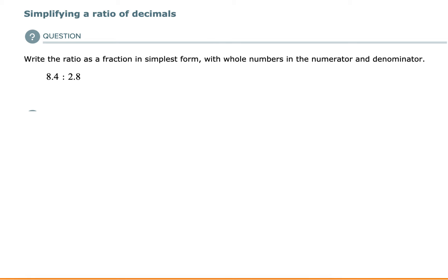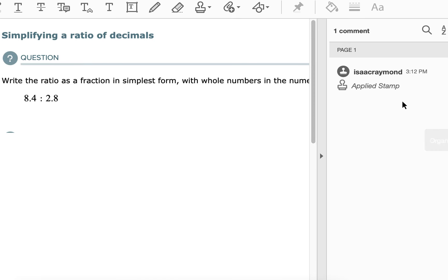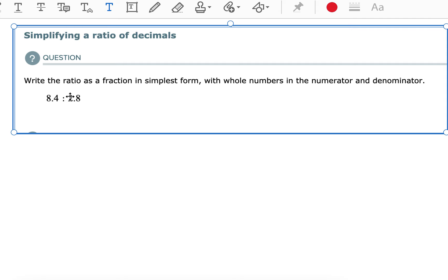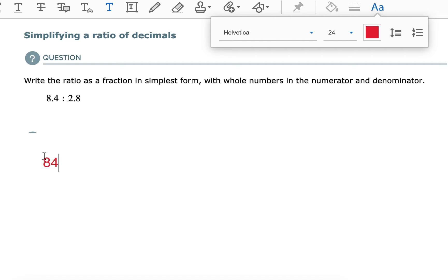Show as a fraction in simplest form. What we want to do is we want to get rid of the decimals first. I'm going to multiply both of them by 10. What you do to one part of the ratio, you have to do to the other. So I'm going to multiply them both by 10, and that's going to make 84 to 28. That's the same ratio. The numbers are different, but it expresses the same comparison between the two numbers.